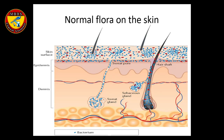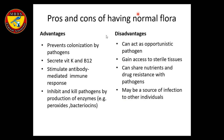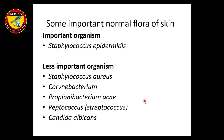The skin surface is covered by normal flora, and if it is removed, pathogens have an opportunity to invade. Pros of having normal flora: it prevents colonization by pathogens, secretes vitamins including B12, stimulates antibody-mediated immune response, and kills or inhibits pathogens by reduction of enzymes. Disadvantages: they can act as opportunistic pathogens when conditions arise in the host, can gain access to sterile sites, share nutrients and drug resistance with pathogens, and may be a source of infection for other individuals.